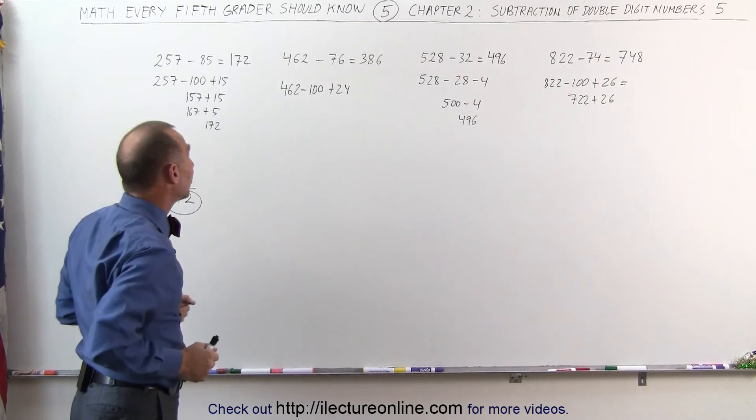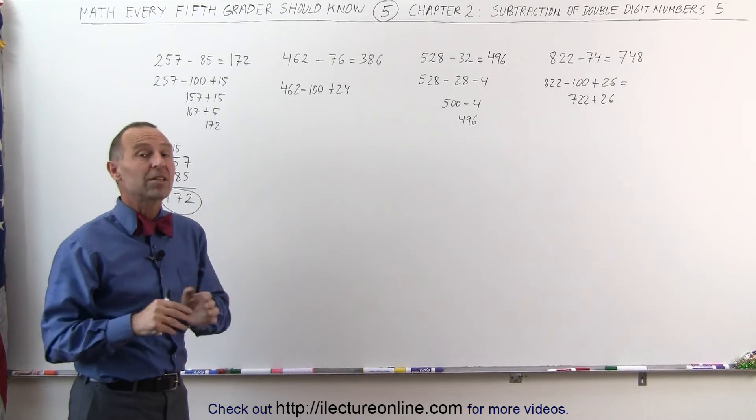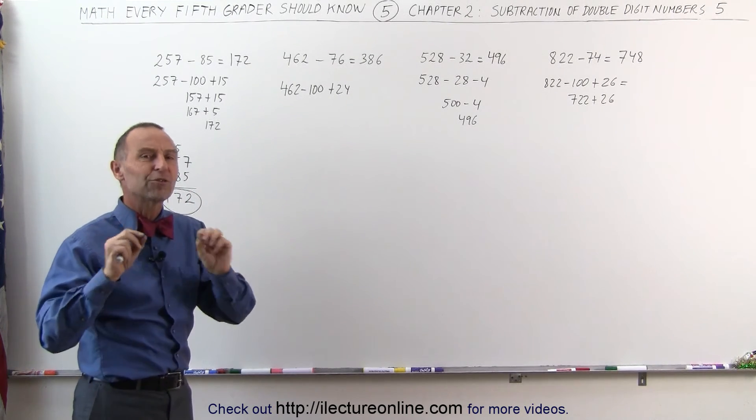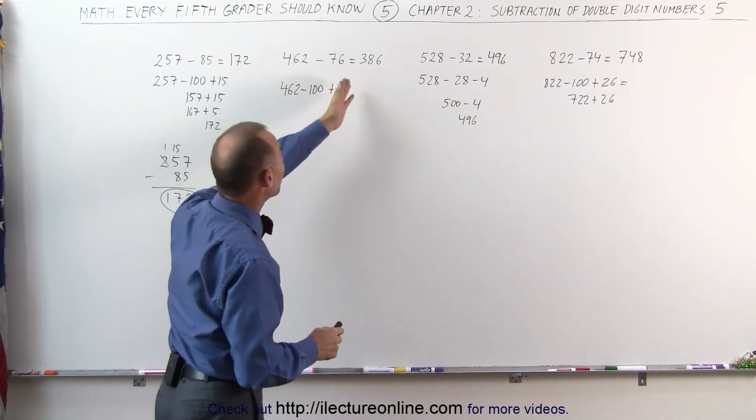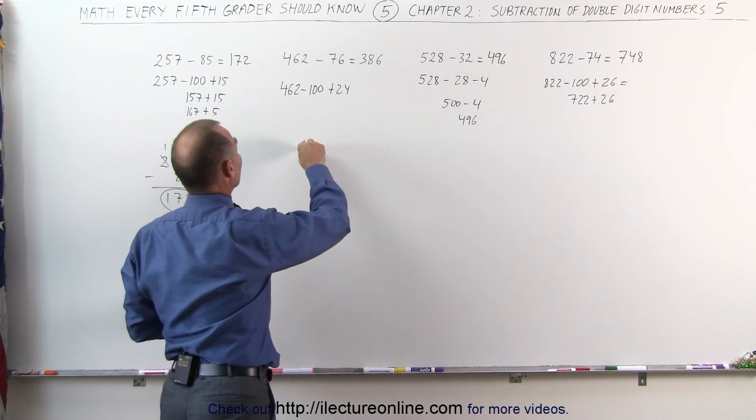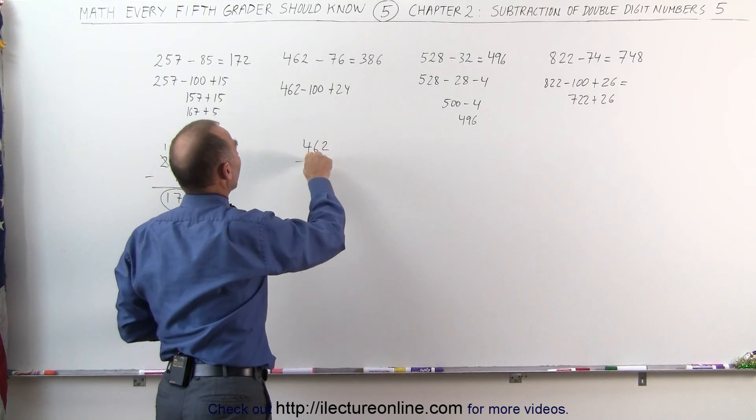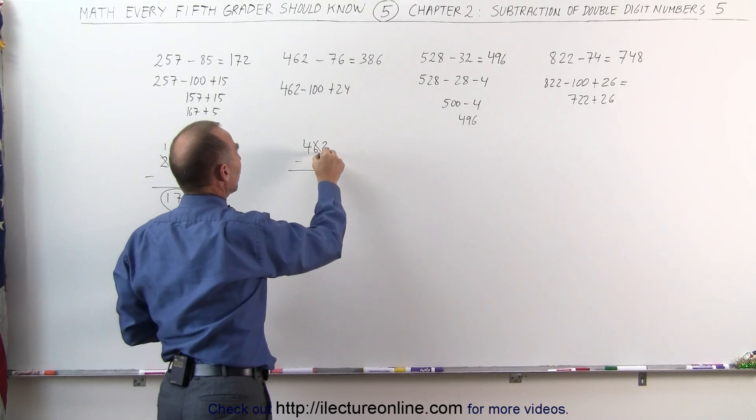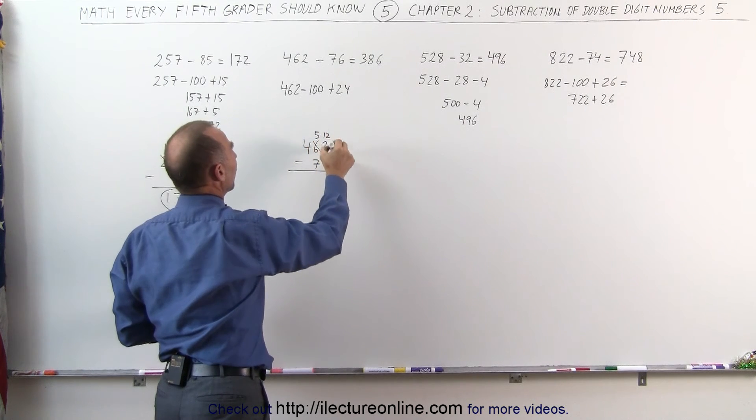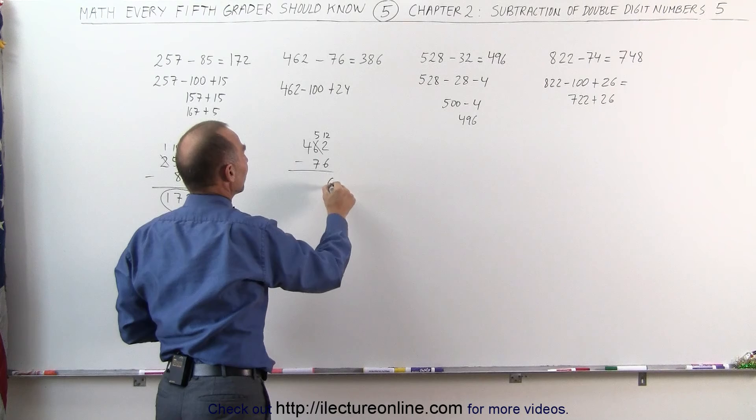Let's say you have to do a problem like this and you really can't remember this technique. Don't panic. You can always fall back to your old technique. For example, if you don't remember how to do it like this, you can simply say, alright I'll just go 462 minus 76. 2 minus 6, I can't do that. I have to go borrow 1. This becomes a 5. This becomes 12. 12 minus 6 gives me 6.